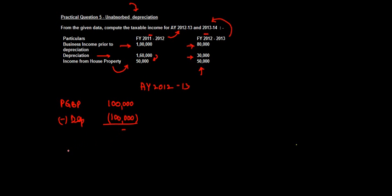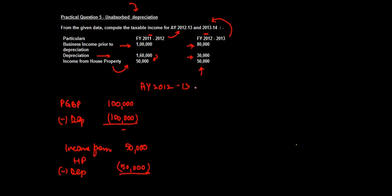Regarding the set-off and carry forward: income from house property is fifty thousand. Depreciation — specifically current year depreciation, not unabsorbed depreciation — is set off against this fifty thousand, bringing income to zero. So income under both heads is zero.